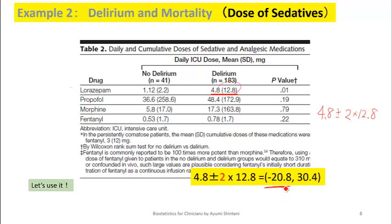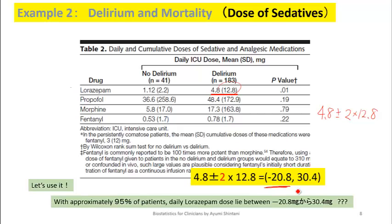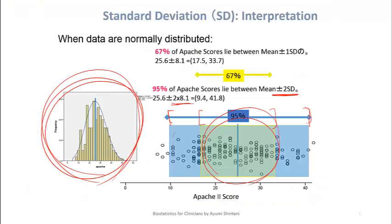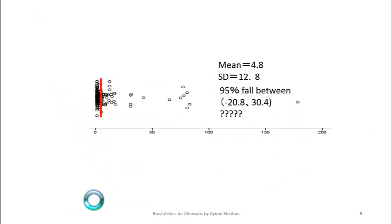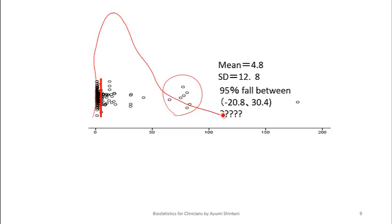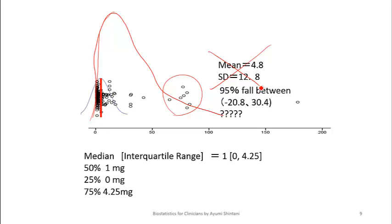Something strange is happening. Can we say 95% of observations fall in a range that goes negative? No, we can't. This is a pitfall of standard deviation — it only has meaning if the data are normally distributed. Looking at the lorazepam data, many patients have a dose of 0 mg, but a few patients have very high numbers. The histogram is not bell-shaped — it's skewed. For skewed data, you can't really use mean and standard deviation. Instead, you use median and interquartile range.